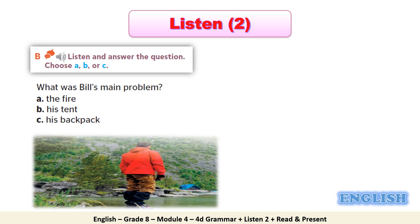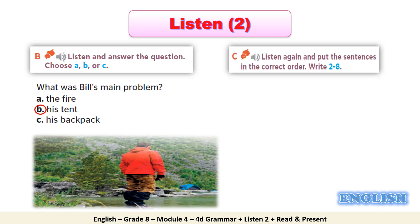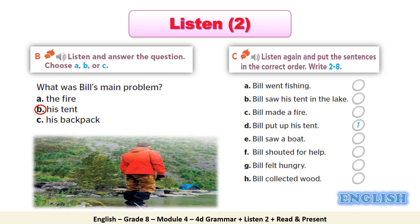So what was Bill's main problem? That's right — his tent. In Activity C, read through the sentences A to H first, then rewind the listening audio and listen again to put the events in the correct order. Pay attention that the first one has been done for you.